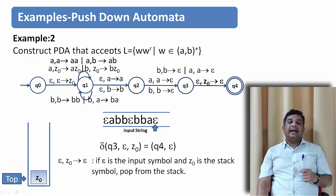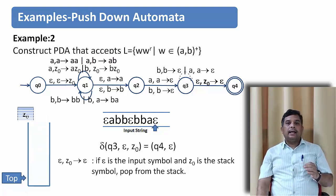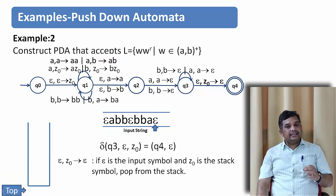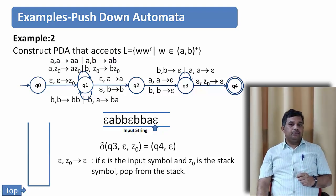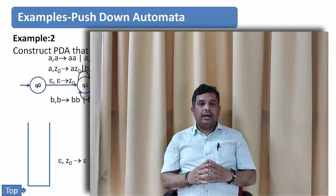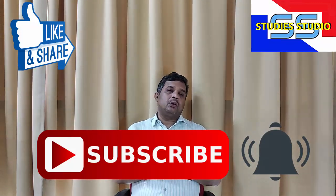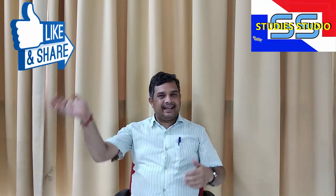The next input symbol is epsilon and the top of the stack contains Z0. We pop Z0 and go to Q4, which is the final state. Now nothing is in the input string and nothing is in the stack, so the string is accepted by this pushdown automaton. If you understood, give a like and share among your friends. In our next video we are going to talk about some other aspects of pushdown automata. See you then, take care, bye.